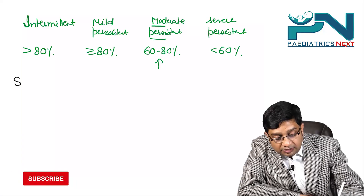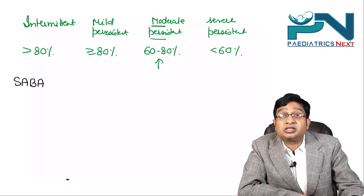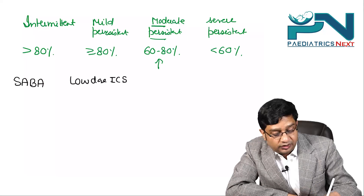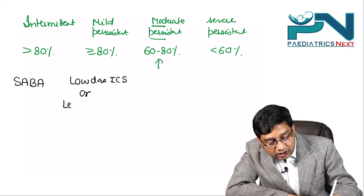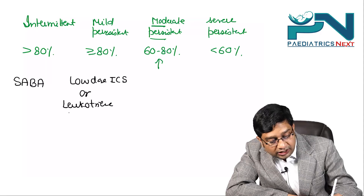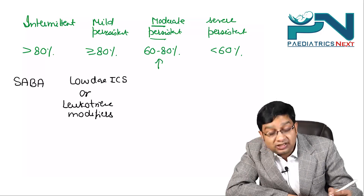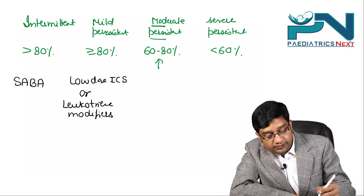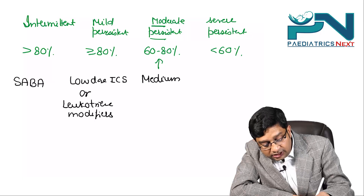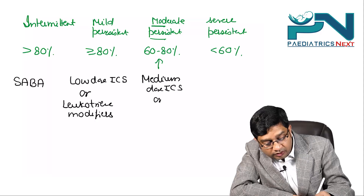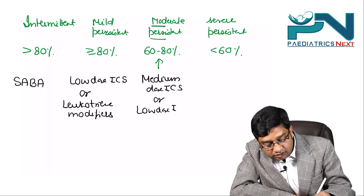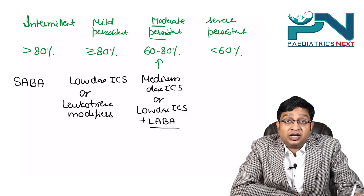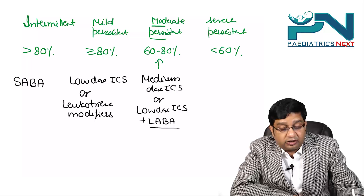In intermittent asthma, treatment is short-acting beta agonist. In mild persistent, you give low-dose inhaled corticosteroids or leukotriene modifiers. Mast cell stabilizers are no longer indicated in childhood asthma according to the latest edition of Nelson. In moderate persistent, you give medium-dose inhaled corticosteroids or low-dose inhaled corticosteroids plus long-acting beta agonist. Long-acting beta agonists are never given alone — always in combination with inhaled corticosteroids.